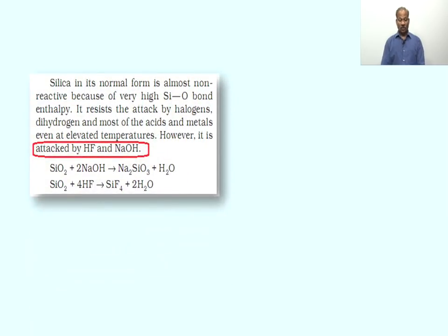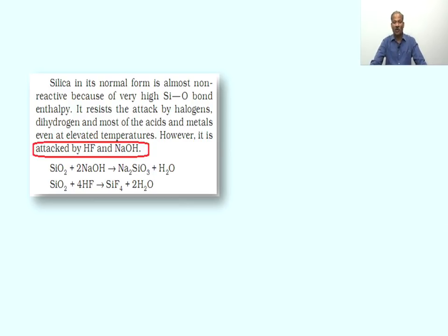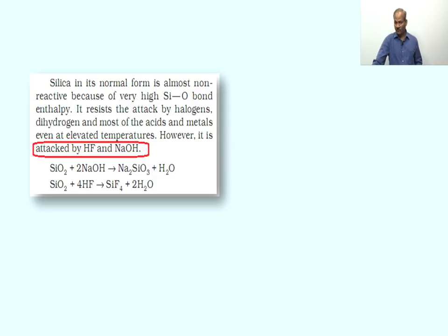Silica in its normal form is almost non-reactive because of the very high silicon–oxygen bond enthalpy. It resists attack by halogens, dihydrogen, and most acids and metals even at higher temperatures. But it is easily attacked by HF and sodium hydroxide. Silicon dioxide reacts with sodium hydroxide to form sodium silicate, and reacts with HF to form SiF₄.